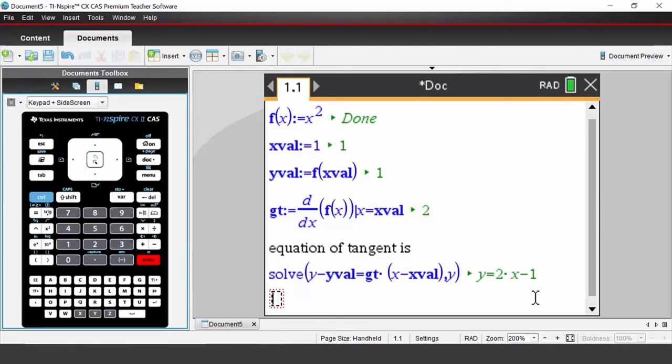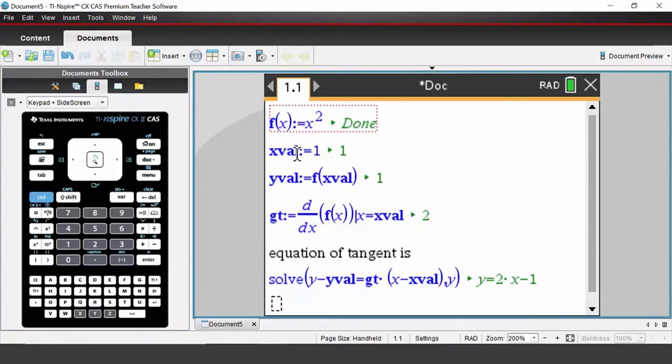Now the beauty of this interactive document is that you can now come back up and change any of your input values. So instead of a parabola, let's say I had a cubic—I just have to change that to x cubed, press enter, and everything will automatically update.